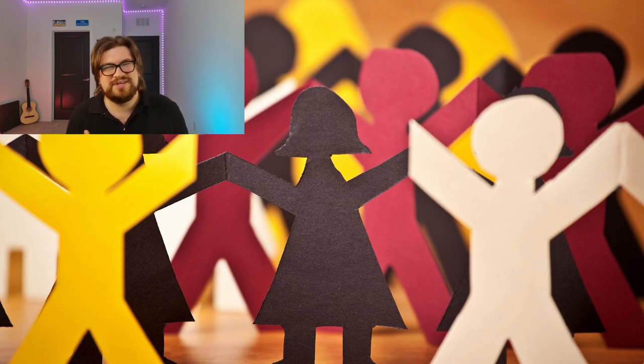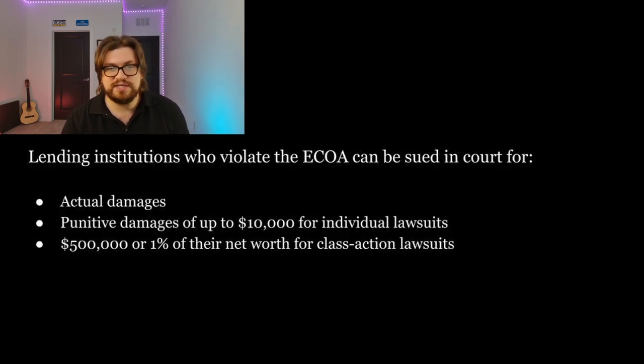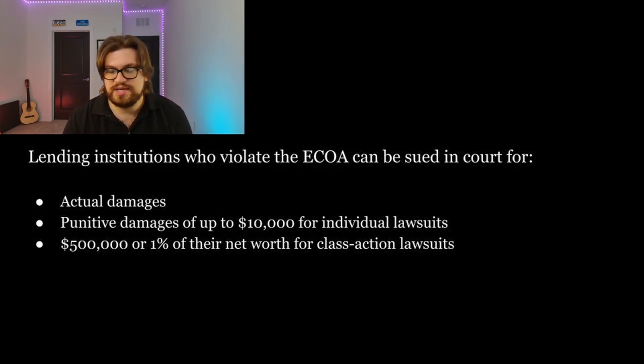The ECOA was passed because women were regularly facing discrimination from mortgage lenders. Lenders often refused to consider a married woman's income when giving out loans and denied credit to single women more often than other applicants. The Equal Credit Opportunity Act was created to prohibit this type of discrimination based on sex and marital status. Congress later amended the act to include the other protected classes. Penalties for the ECOA include actual damages, punitive damages of up to $10,000 for individual lawsuits, and $500,000 or 1% of net worth for class action lawsuits.